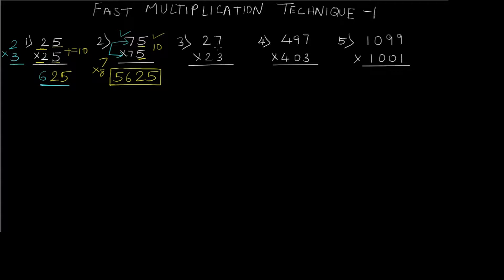Let's see the third question. Here the units digits are not equal — we have 7 and 3 — but 7 plus 3 equals 10, so the first condition is satisfied. The tens digits are both equal, so the second condition is also satisfied. Applying the trick: 7 times 3 is 21, and 2 times 3 (which is 2 plus 1) is 6. So the answer is 621.